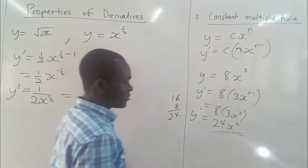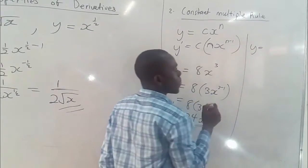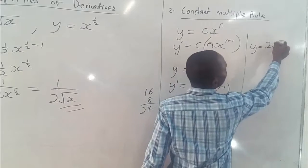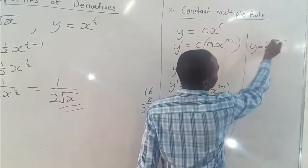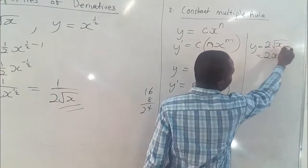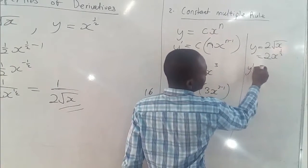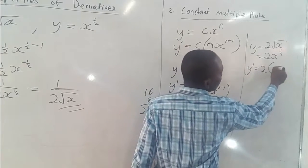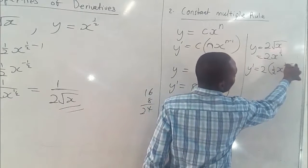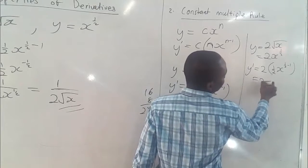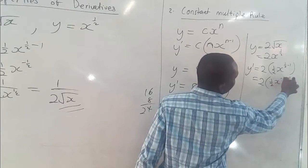Let's take another complex one. We have y equals 2 square root of x. We rewrite this as 2x to the power half. So it becomes a constant multiple of that expression. So our first derivative becomes separating the two and differentiating the x to the power half. So we have half x to the power half minus 1, which gives us x to the power negative half.